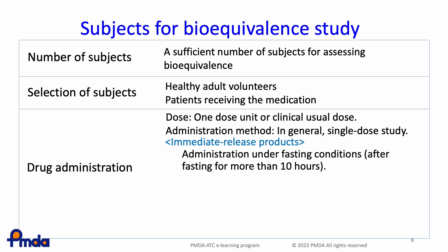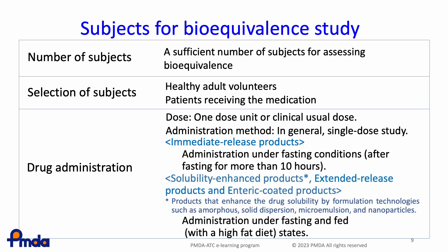For immediate release product studies, drugs are usually given to subjects with 100 to 200 milliliters of water, normally 150 milliliters, after fasting for more than 10 hours. For solubility-enhanced products, extended release products, and enteric-coated products, bioequivalence studies should be performed as single dose studies for both fasted and fed conditions.